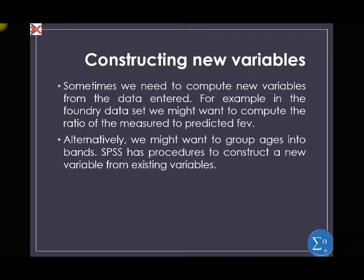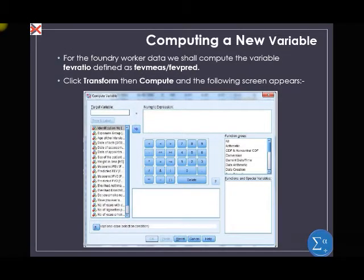Constructing New Variables. Sometimes we need to compute new variables from the data entered. For example, in the Foundry dataset, we might want to compute the ratio of the measure to predict FEV. Alternatively, we might want to group ages into bands. SPSS has a procedure to construct a new variable from an existing variable.